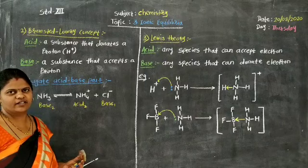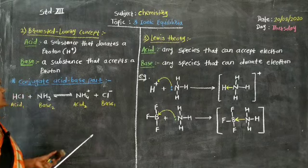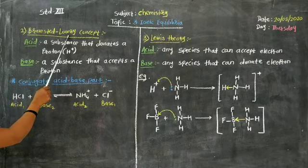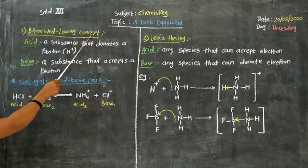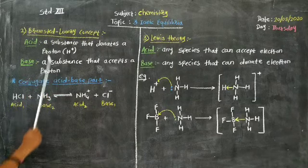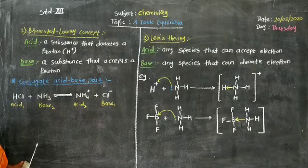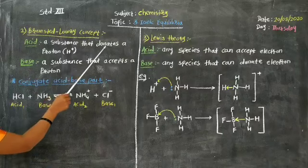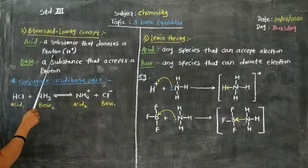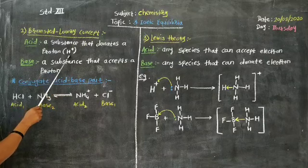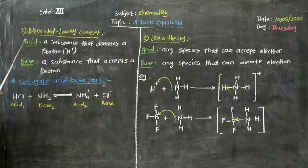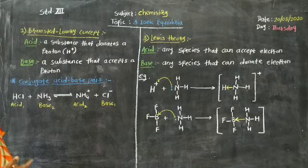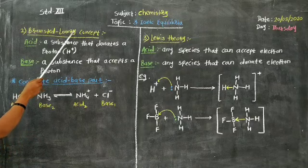After Arrhenius, the next scientists who gave us definitions for acids and bases were Bronsted and Lowry, and therefore the concept is known as the Bronsted-Lowry concept or theory. According to this theory, an acid is a substance that donates a proton — proton means H+ ions. The substance which can donate H+ ions in aqueous medium is known as an acid according to the Bronsted-Lowry concept.